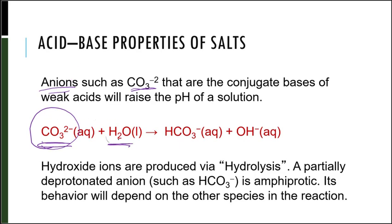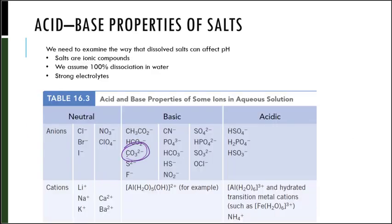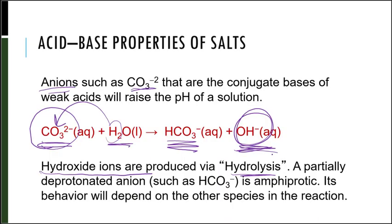Carbonate is going to be a proton acceptor. One of those hydrogens is going to donate an H to CO3²⁻, giving me HCO3⁻ and hydroxide. One of my products is hydroxide — hydroxide ions are produced via hydrolysis. Looking back at the table, CO3²⁻ is going to make the solution more basic, which makes sense. Hydroxide being produced is going to raise the pH of the solution.